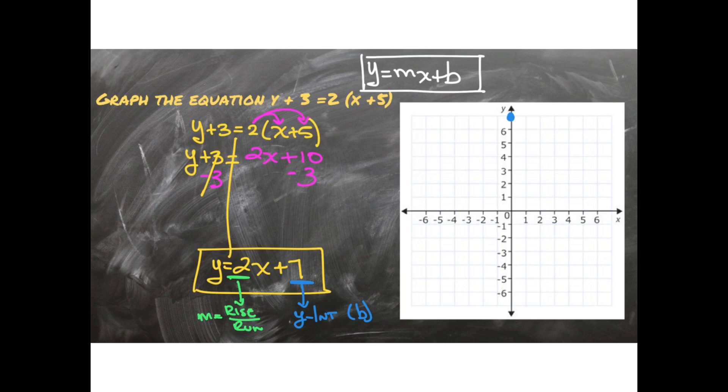And then from this point we're going to follow our rise over run, which in this case it'll be rise 2, run 1, because there's an invisible 1 down here. So if I try to go from my starting point 2 up and 1 over, I'm out of space.